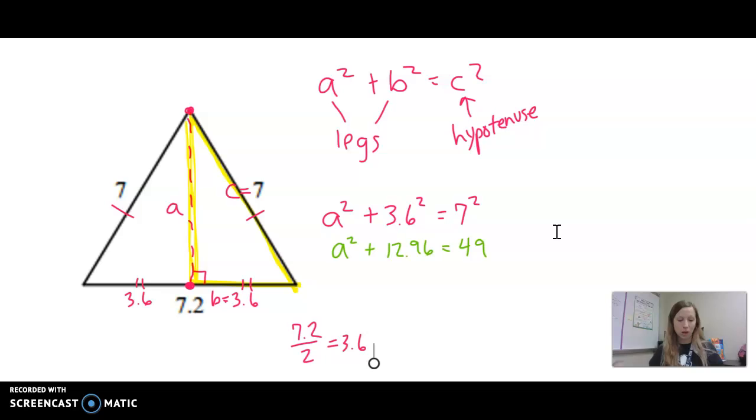And we solve it like a regular equation. So I'm going to subtract 12.96 from both sides. So we get A squared alone now. 49 minus 12.96 is 36.04. And keep in mind, A is not by itself yet. It has the squared with it. So to get rid of a squared, we take the square root of both sides. So A is approximately, not exactly, 6.003.